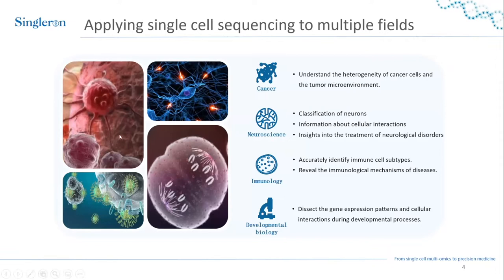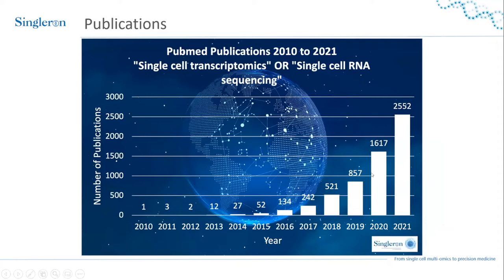Other important fields include neuroscience, where you want to classify neurons and understand neurocommunication; immunology, to explore how the immune system responds to different stimuli; and developmental biology, to explore gene expression dynamics and developmental processes. This field has been growing quite fast in recent years — in 2021 alone over 2,500 papers were published using single cell RNA sequencing.